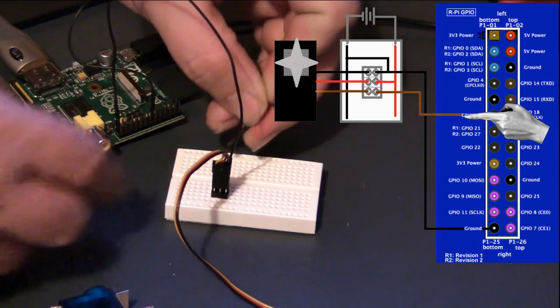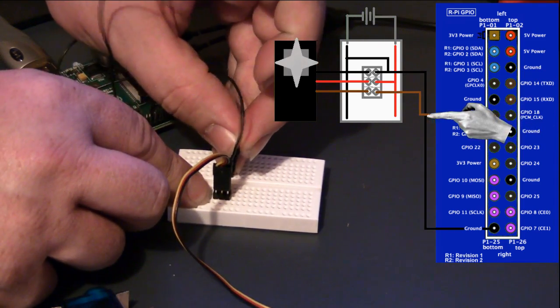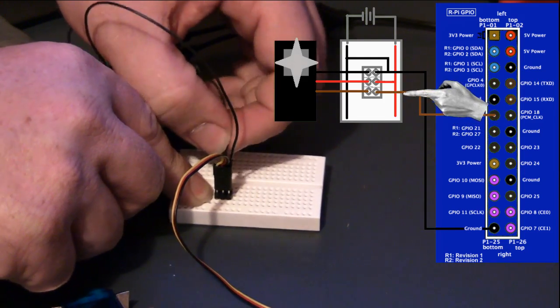Then, of course, the second jumper wire coming from pin 11 on the Raspberry Pi goes to the yellow or white lead coming from the servo motor.